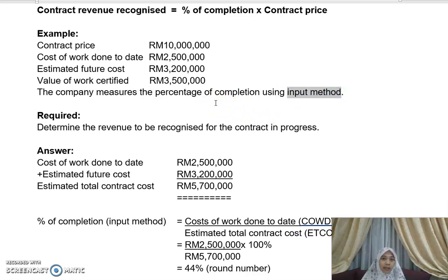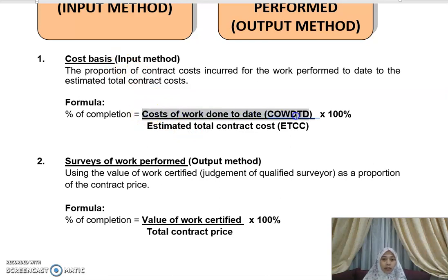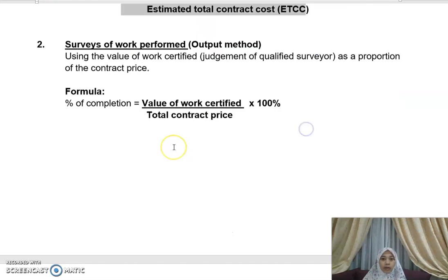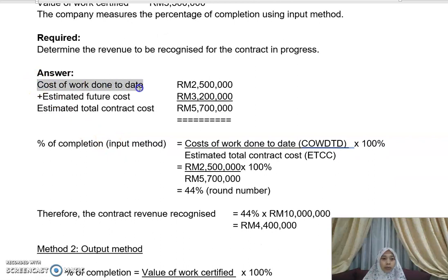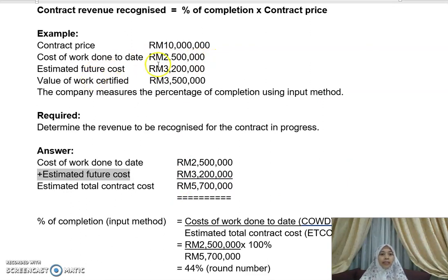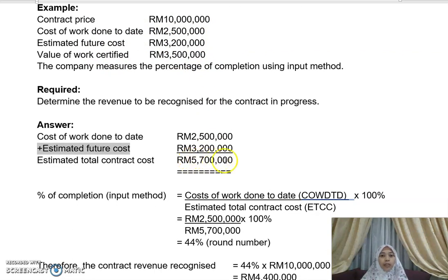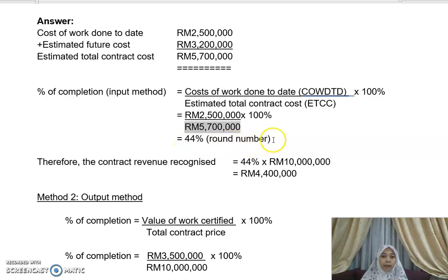Using method one — the cost basis or input method — you take cost of work done to date divided by estimated total contract cost. Cost of work done to date is 2.5 million. Estimated total contract cost = cost of work done to date plus estimated future cost = 2.5 million + 3.2 million = 5.7 million. Percentage of completion = 2.5 / 5.7 = approximately 44%.